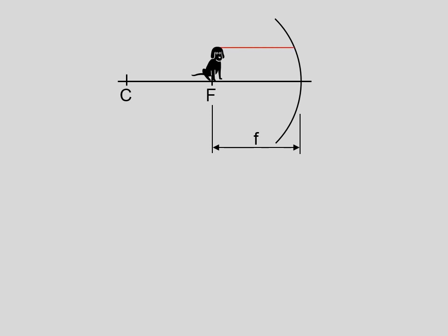Rule number one says: head parallel to the principal axis and reflect back through the focal point. Rule number two says: start at the top of the object and head through the focal point, or towards the focal point — and that is a problem. So rule number two doesn't quite work here.